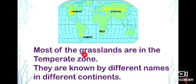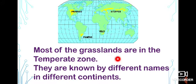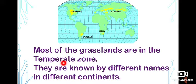Now, look at the map. The yellow areas are the grasslands. Most of the grasslands are in the temperate zone. They are known by different names in different continents. You all know about continents.